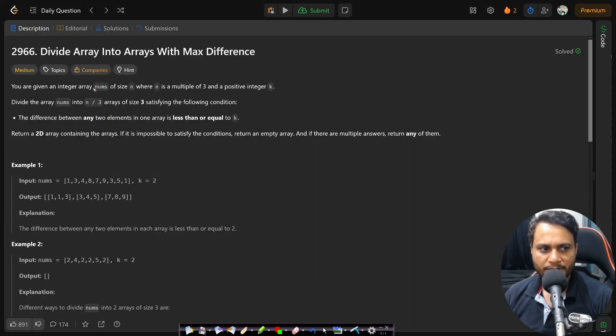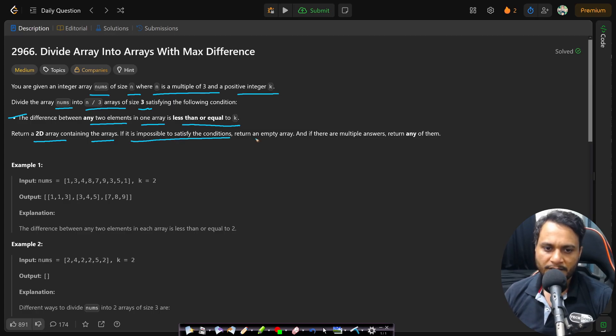Let's now read the problem statement. In this problem, you are given an integer array nums of size n, where n is a multiple of 3, and a positive integer k. Divide the array nums into n by 3 arrays of size 3 satisfying the following condition: the difference between any two elements in one array is less than or equals to k. Return a 2D array containing the arrays. If it is impossible to satisfy the conditions, return an empty array. If there are multiple answers, return any of them.